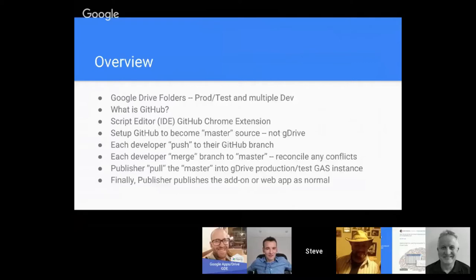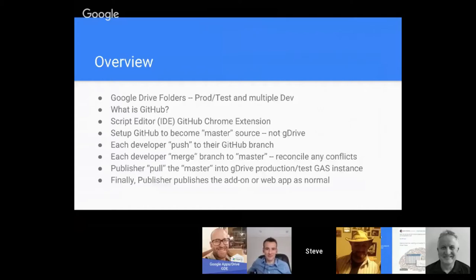We're going to talk about what is GitHub briefly, and then introduce a Chrome extension that supplements the existing Script Editor IDE. Then we'll set up GitHub to become the master source in Google Drive - instead of your source being within Google Drive, we're actually going to use GitHub as version control software. Each developer will push to their GitHub branch, merge it with the master, reconcile any conflicts, and then have a separate production or test instance. You open another copy of that Google Apps Script, pull from version control from that master, and then do your normal Google Apps Script publishing.